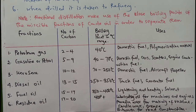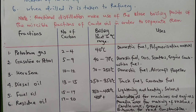Kerosene is used as domestic fuel — in kerosene stoves, which some people in Nigeria still use — and as aircraft fuel. Diesel oil has carbon numbers from 13 to 15 and a boiling point of 250 to 350 degrees Celsius; it is mostly used as truck fuel and generator fuel. Fuel oil has carbon numbers from 15 to 17 and a boiling point of 350 to 400 degrees Celsius; it is used for lighting, heating, and mostly serves as a solvent.